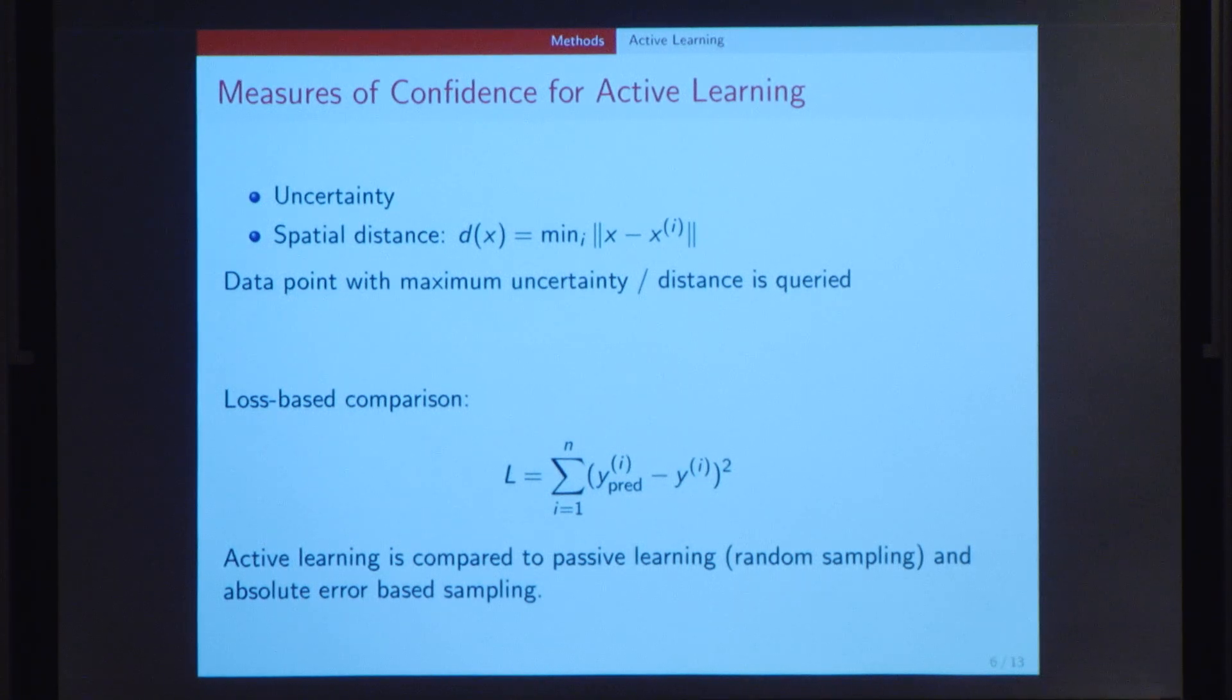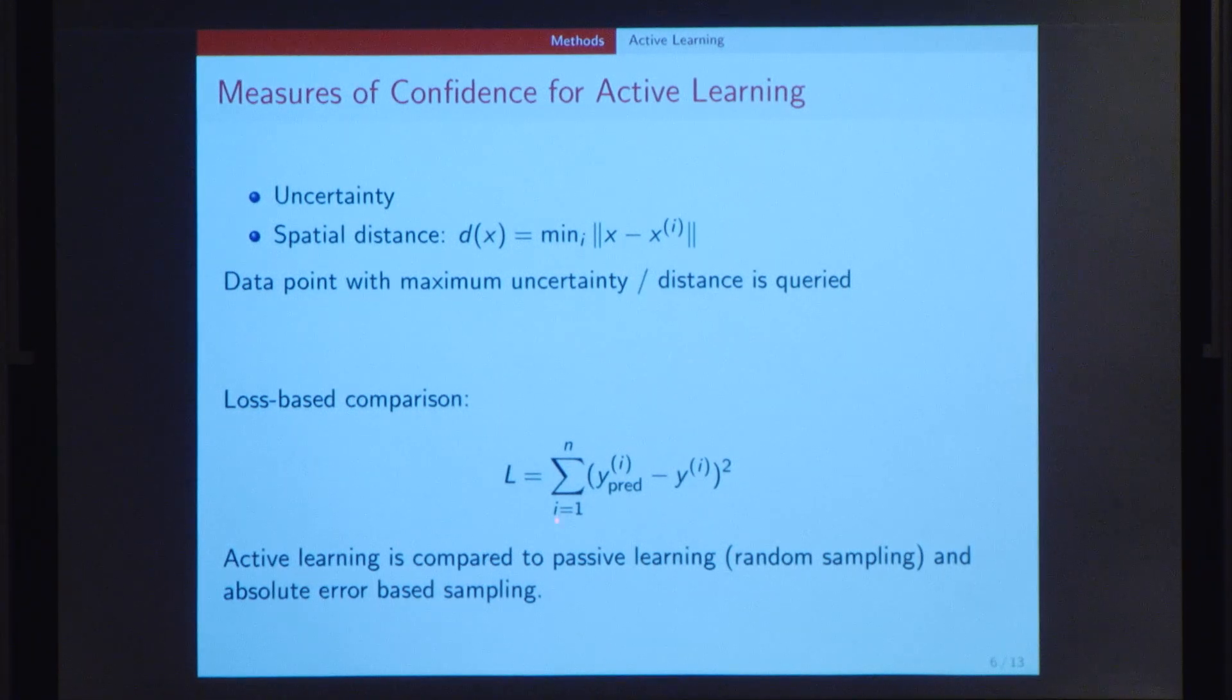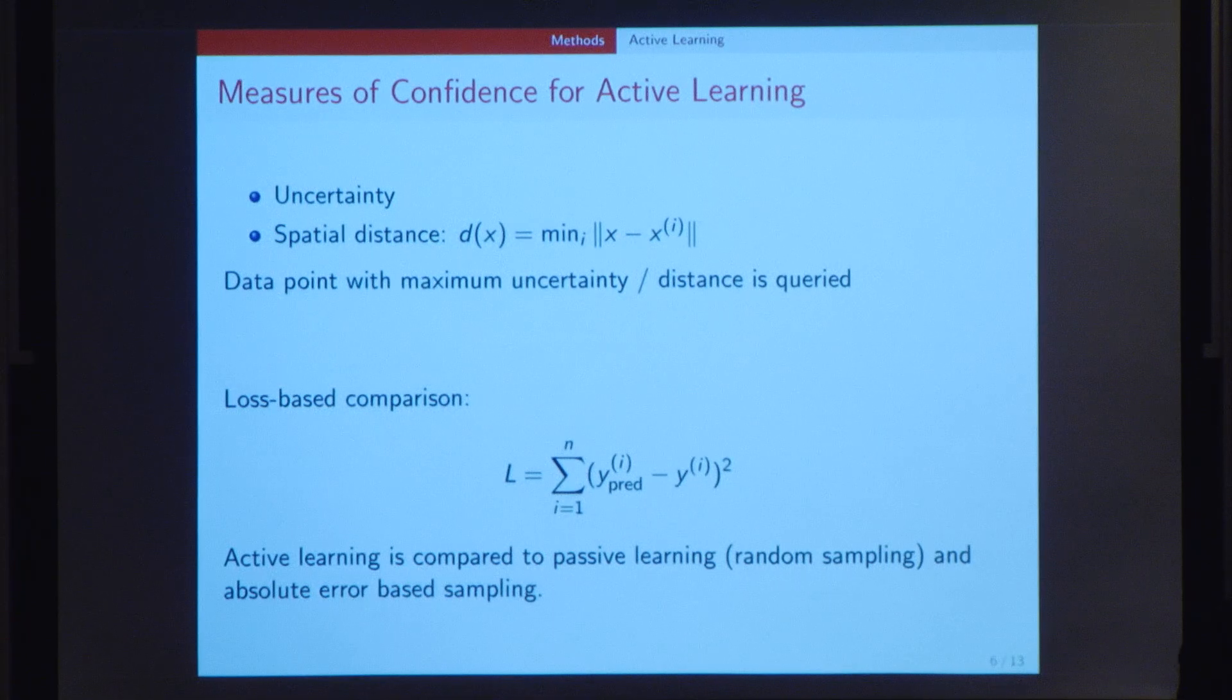We compared these two algorithms with passive learning or random sampling, which is the machine learning algorithm commonly used, as well as absolute error-based sampling, where we use absolute error as the metric. We would expect absolute error-based sampling to act as the upper bound of performance, because it takes into account the absolute difference between the true Y values and the predicted Y values. And we usually wouldn't have access to those true Y values in an actual situation. We performed these comparisons using this loss function, as the sum of squared differences between the true Y values and the predicted Y values.